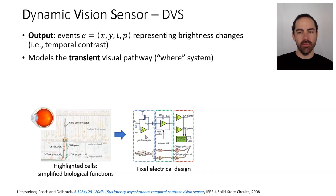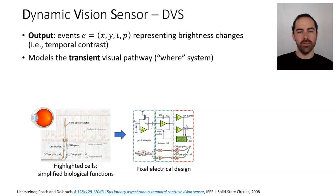You can see here the three parts: the photoreceptor, the bipolar cell, and the ganglion cell, which are like converting light into an electrical signal, then differentiating and amplifying it, and comparing it to some threshold values to produce on and off events.